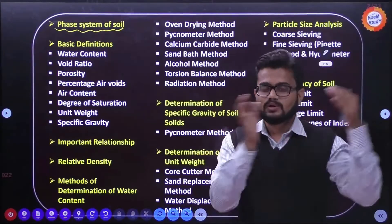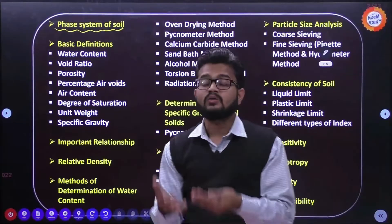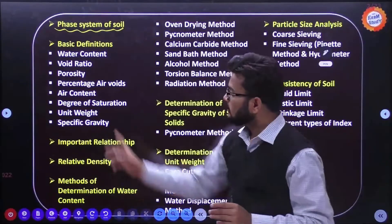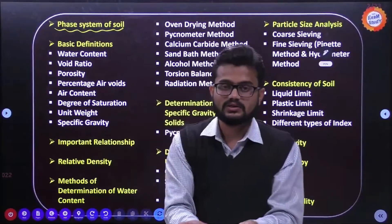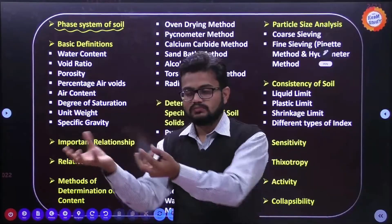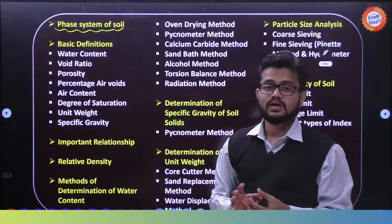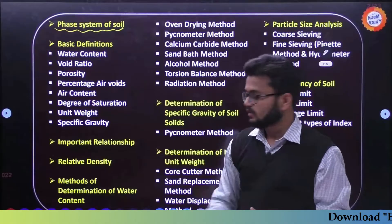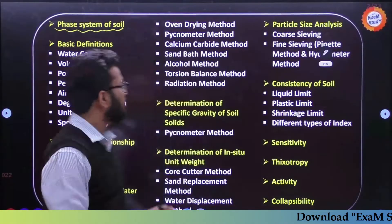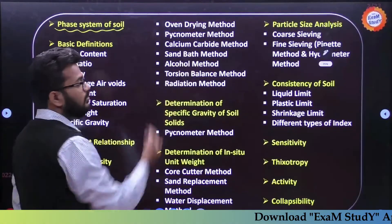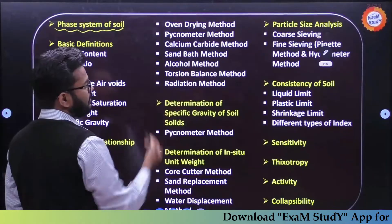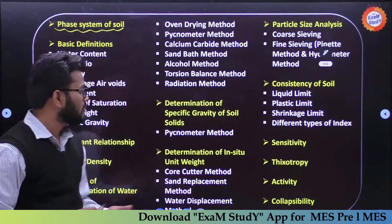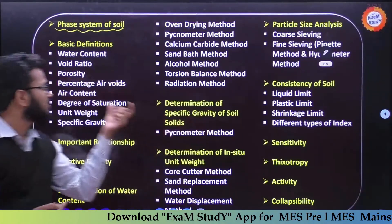We will also check characteristics of fine-grained and coarse-grained soils. Then we discuss methods of determination of water content. A parameter is defined mathematically, but in the field you need to actually find it out from a sample. The methods include: oven dry method, pycnometer method, calcium carbide meter, sand bath method, alcohol method, torsion balance meter, and radiation method.